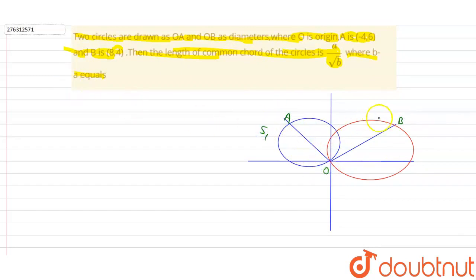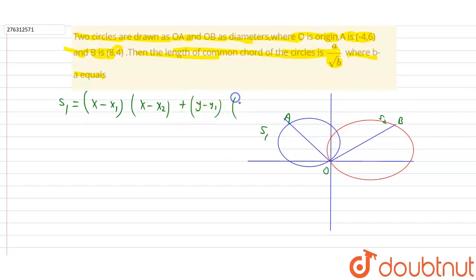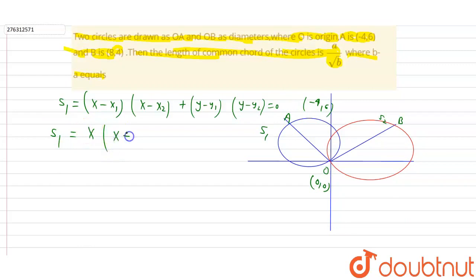For equation S1, we have a circle with diameter endpoints. The formula is: x minus x1 times x minus x2, plus y minus y1 times y minus y2, equal to 0. So for S1, using origin (0,0) and point (minus 4, 6): S1 equals x times (x plus 4) plus y times (y minus 6) equal to 0.